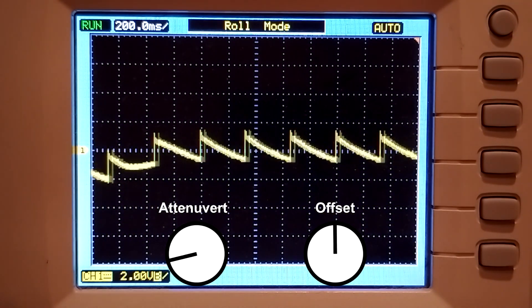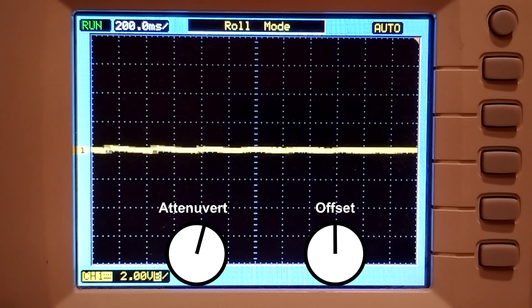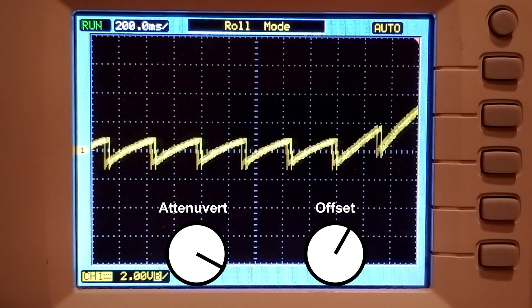Now when turning the attenuverter knob clockwise, a rising sine wave becomes visible, which we can shift up and down with the offset knob.